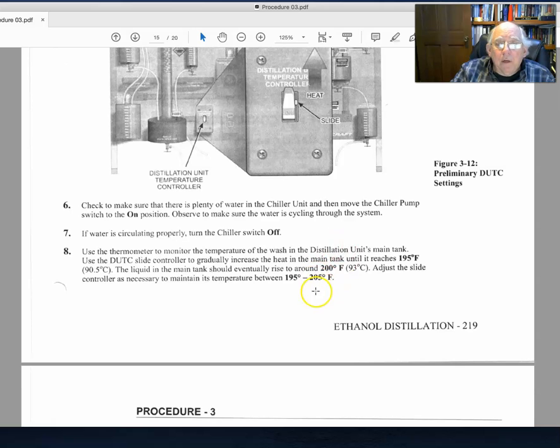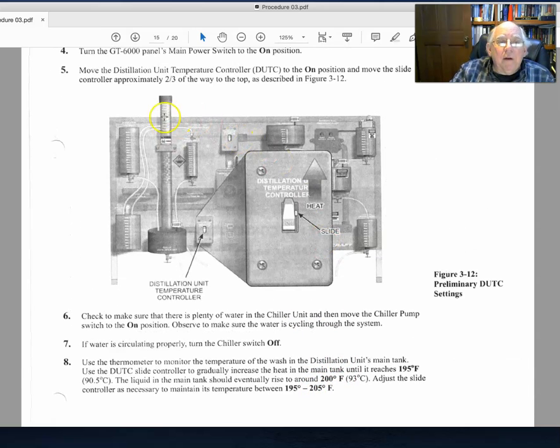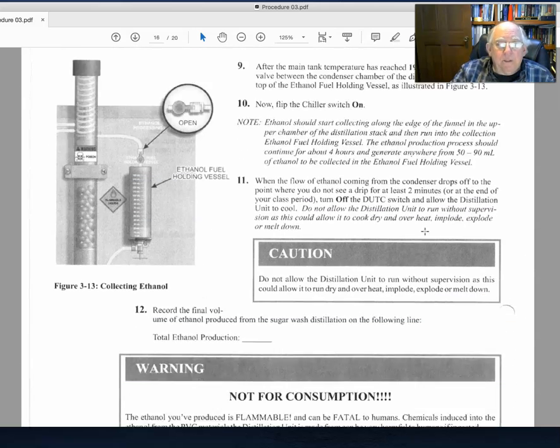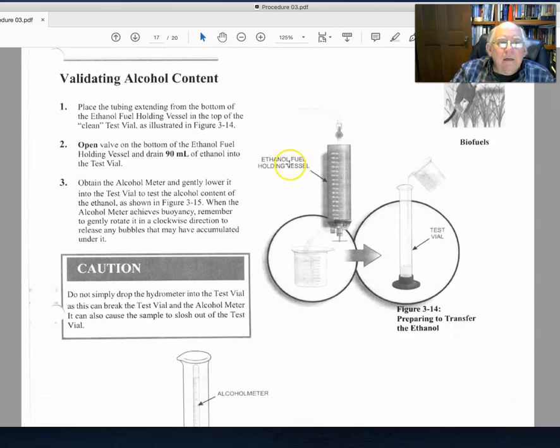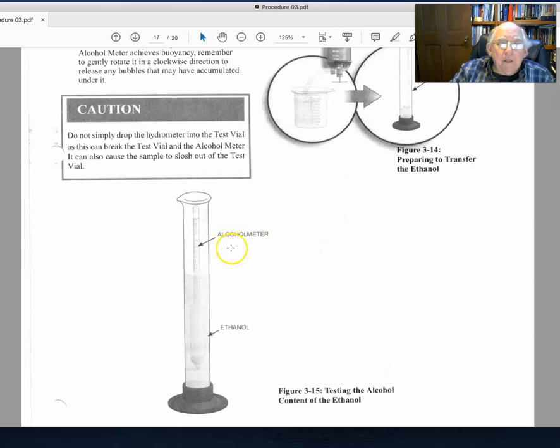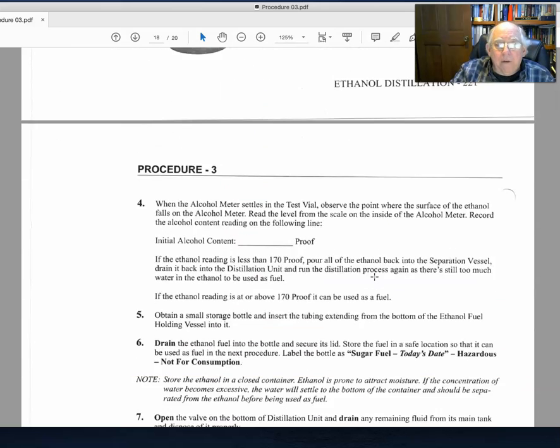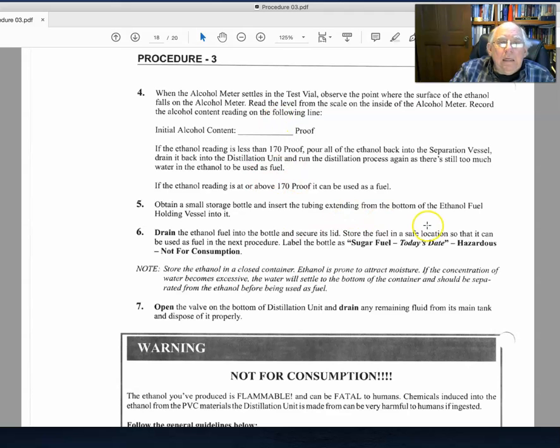And then going through the distillation process in a similar fashion, maintaining the temperature of the boiler not to exceed 205, and waiting for enough time for the vapors to condense into the holding vessel. Then taking out the ethanol fuel and obtaining the alcohol content once again by the use of the alcohol meter, and reporting the alcohol level in a proof which is just two times the percentage by volume.